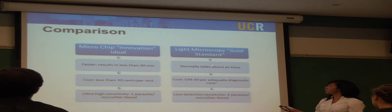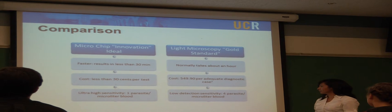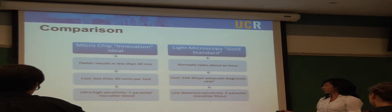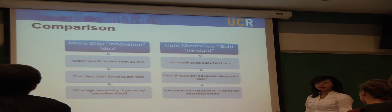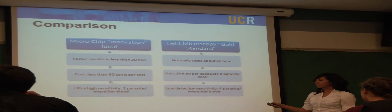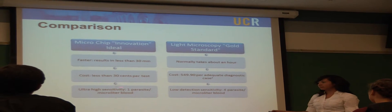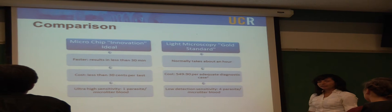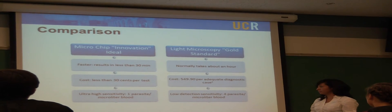The sensitivity for the gold standard is dependent on the technician's skill and experience and is usually low, about four parasites per microliter of blood. This means that there's a lot of false negatives associated with the gold standard. The chip is designed to be ultra-high sensitive, about one parasite per microliter of blood. Ideally, this means that the false negatives and the false positives are eliminated.